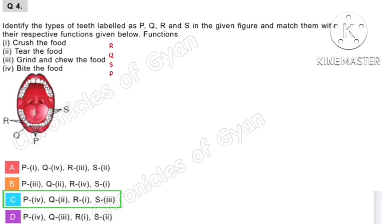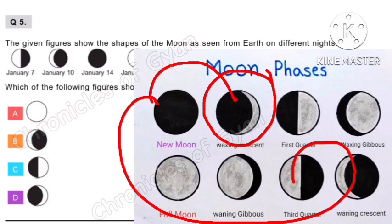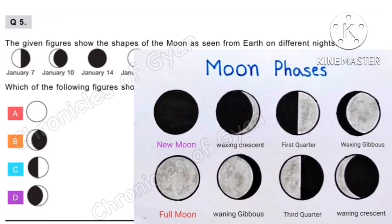Question 5. The given figure shows the shapes of the moon as seen from Earth on different nights. Which of the following figures shows the correct shape of the moon on January 17th? As per the given image, January 7th is 3rd quarter, January 10th is waning crescent, January 14th is new moon. So January 17th will be waxing crescent. Option D.